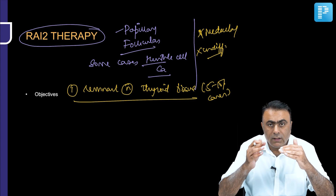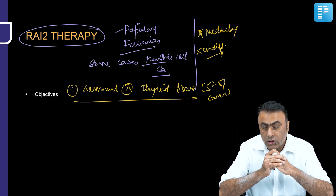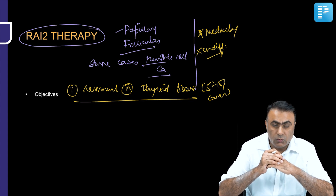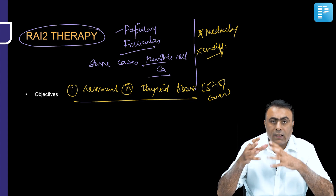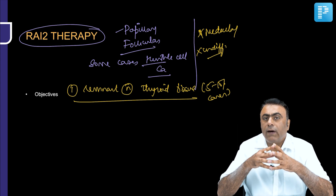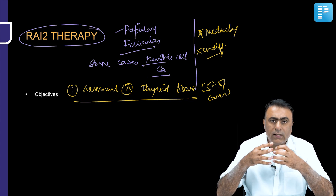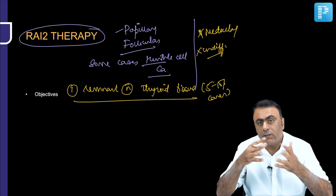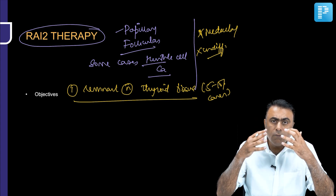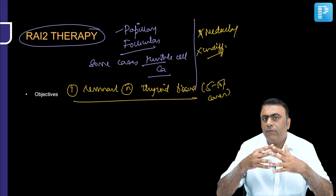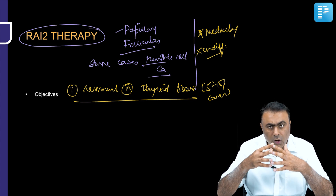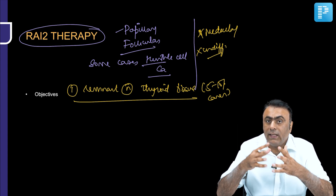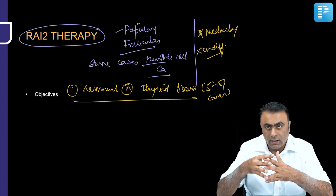Why is it important to look for remnant normal thyroid tissue? Because in the presence of remnant normal thyroid tissue, metastases or recurrences will not take up the radioactive iodine — normal follicular cells have a higher uptake than tumor cells. We want there to be no functional thyroid tissue in the neck for better utilization of the iodine scan post-operatively.